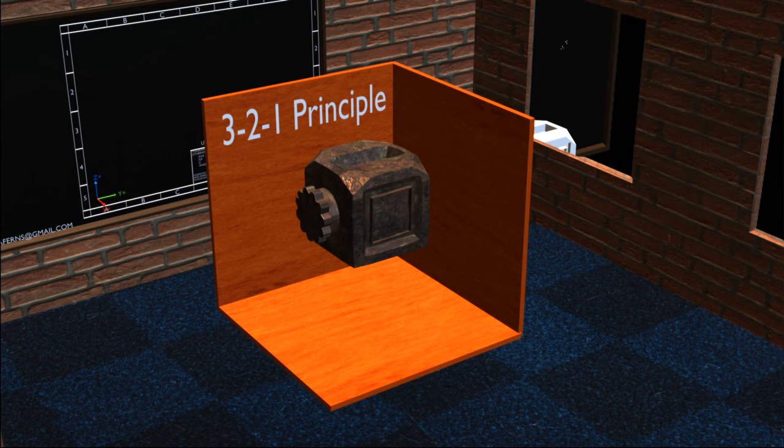The 3-2-1 principle is used to constrain the motions of the object and stabilize it, to perform the required operations on it. We are going to consider each of the motions at a time to get a better understanding.